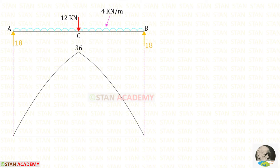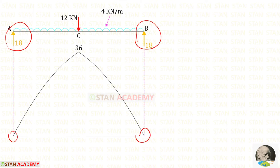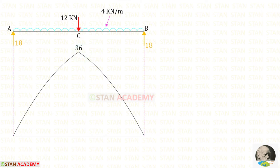Now for the simply supported beam let us draw the bending moment diagram. At the simply supported ends the bending moment is 0, and at point C it is 36 kNm. Since there is a uniformly distributed load over the full span, the bending moment diagram will be parabolic in shape.